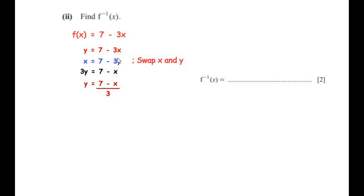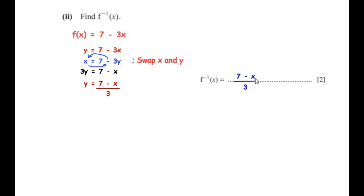Once we swap the positions, we make y the subject again. Taking minus 3y to the other side, negative 3y becomes positive 3y, giving 3y equals 7 minus x. Dividing both sides by 3, y equals (7 minus x) divided by 3. So f inverse of x is equal to (7 minus x) over 3.